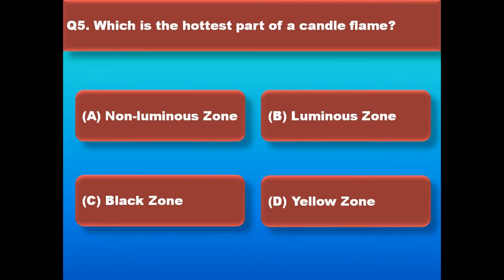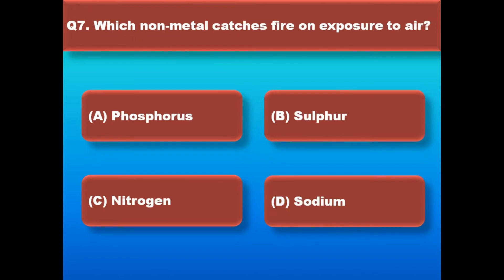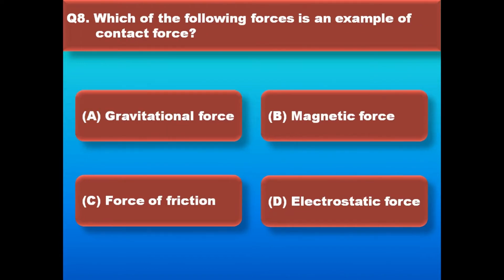Right answer is non-luminous zone. Which polymer is used for preparation of handles of cooking utensils? Right answer is bakelite. Which non-metal catches fire on exposure to air? Right answer is phosphorus.